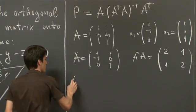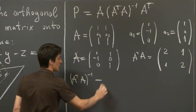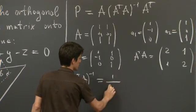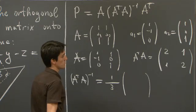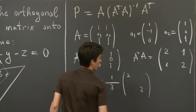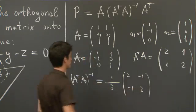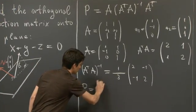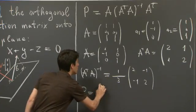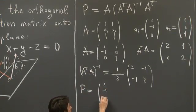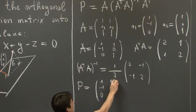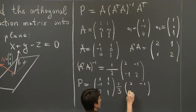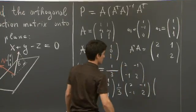Now we shall invert it using the familiar formula: 1 over the determinant. 2 times 2 minus 1 is 3. We switch the diagonal entries and flip the signs of the off-diagonal ones. And therefore, the projection matrix is given by the following product of matrices. So this is (1/3) times the matrix with entries 2, -1, -1, 2, and then A-transpose.